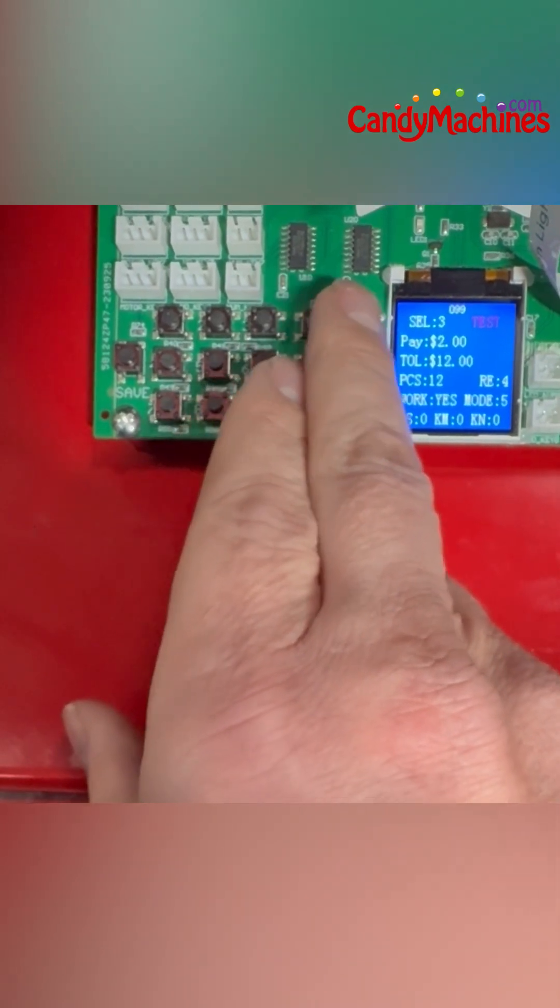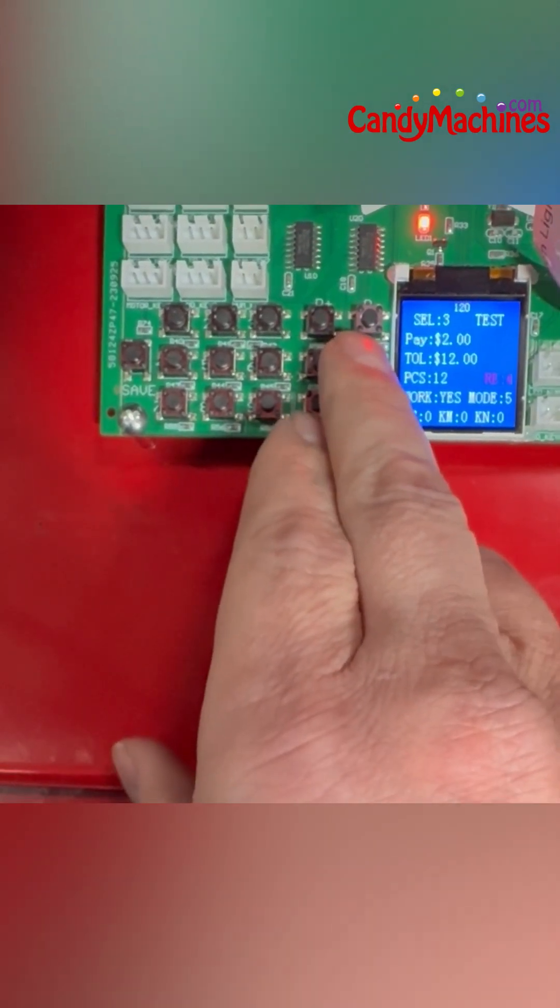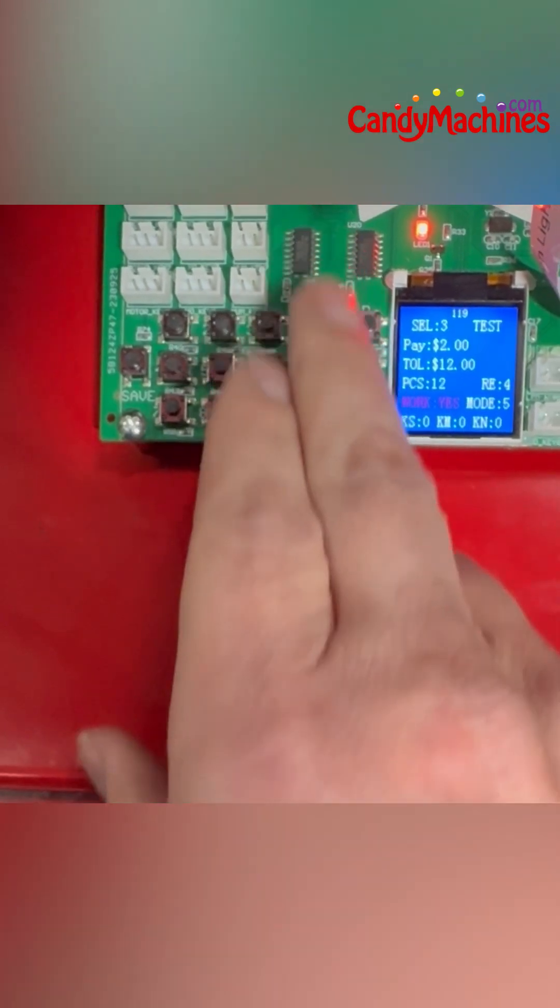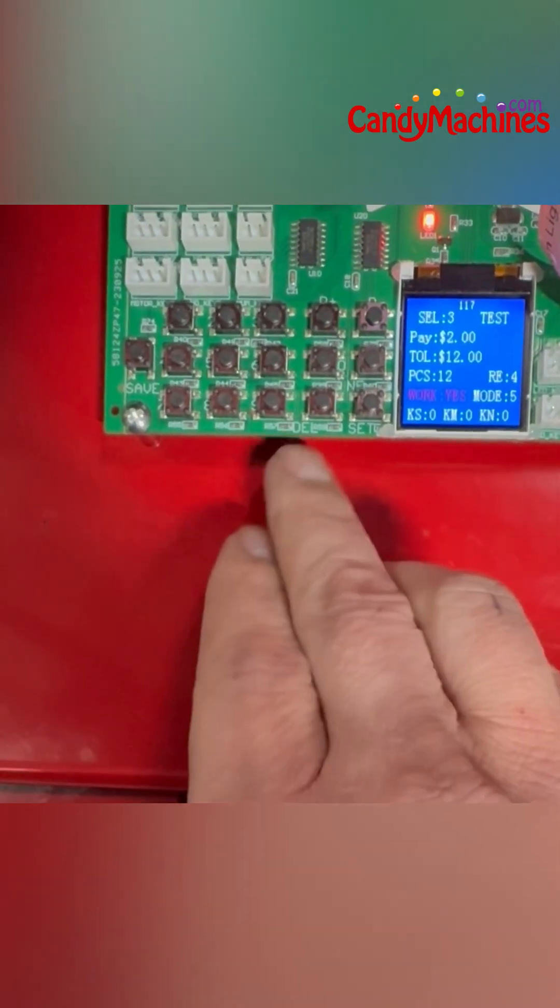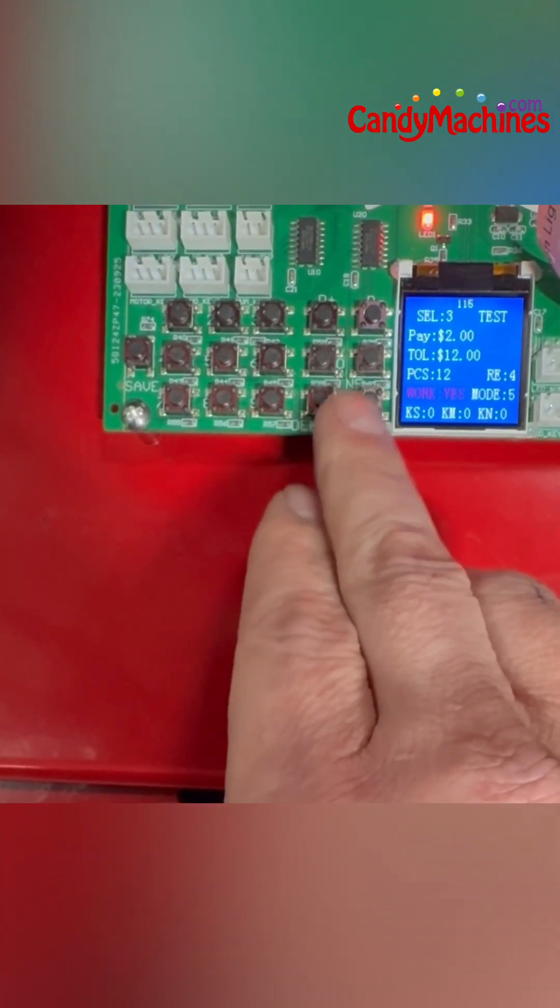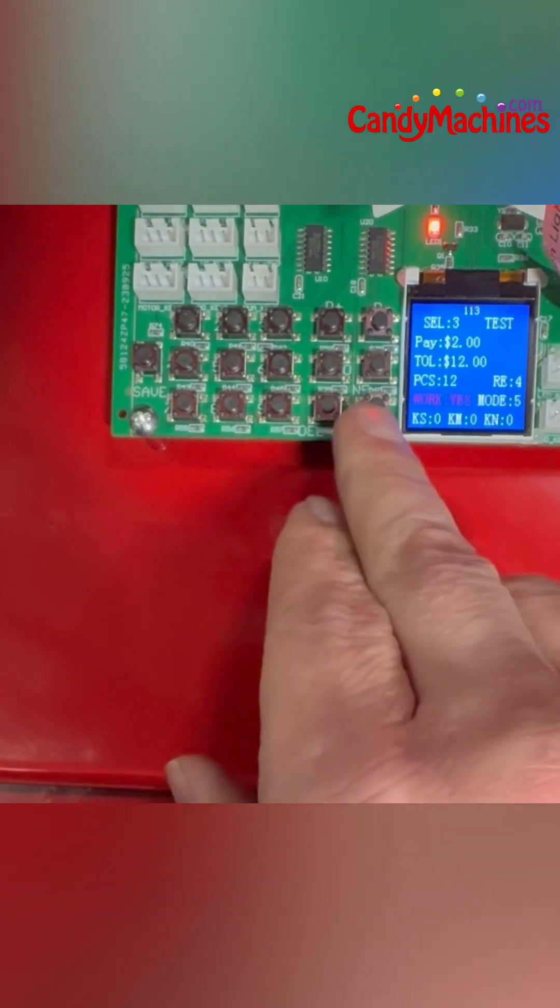You have page up, page down. Then you've got your navigation down button when you're within the selection. You've got the action button, or the enter, basically like an enter button here.